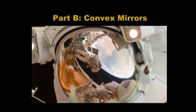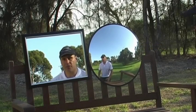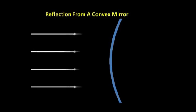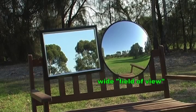Part B covers convex mirrors. We compare the image formed in a convex mirror with the image formed in a flat mirror and explain the concept of field of view.